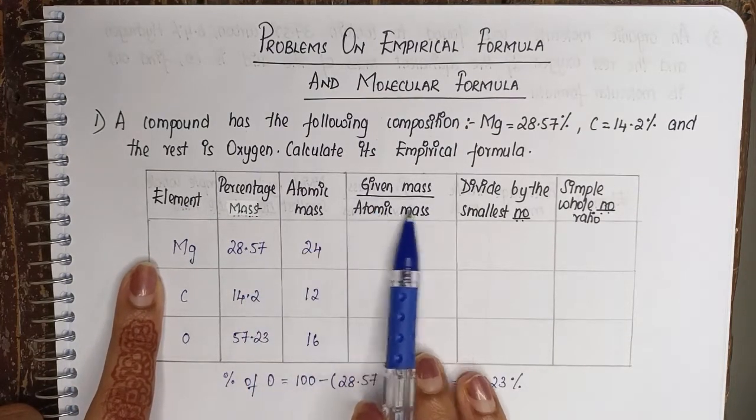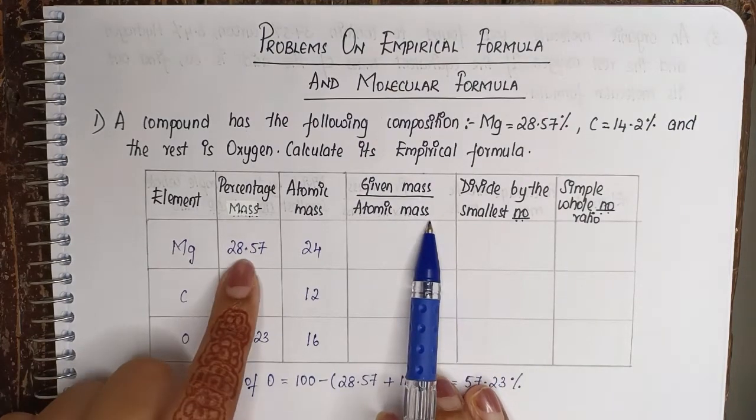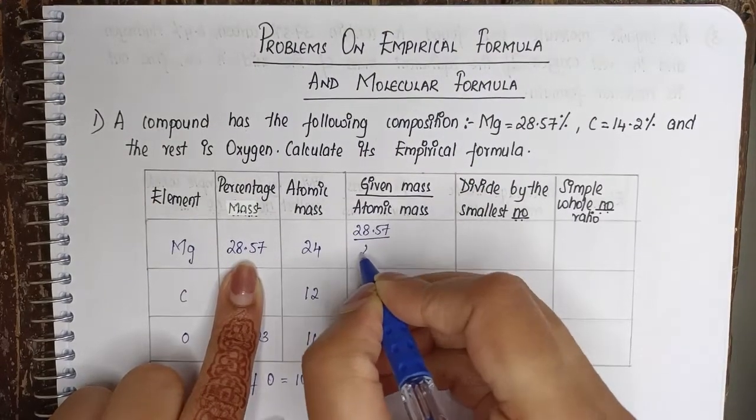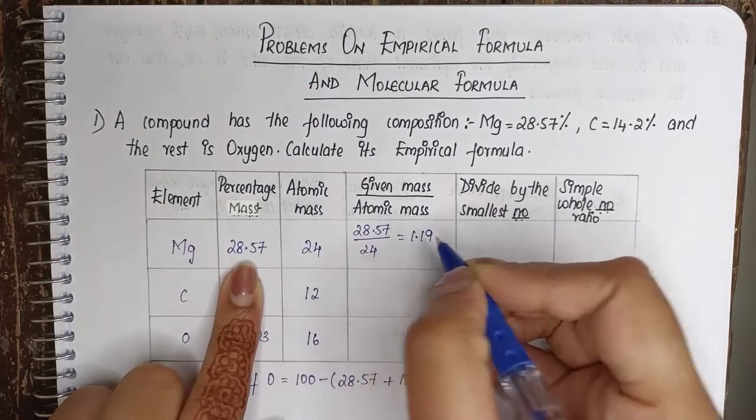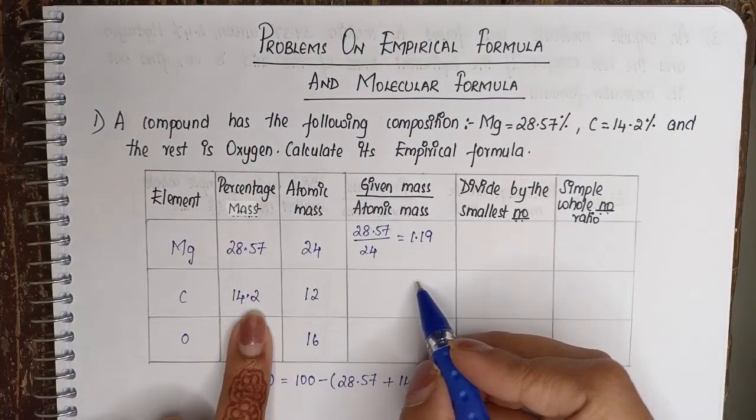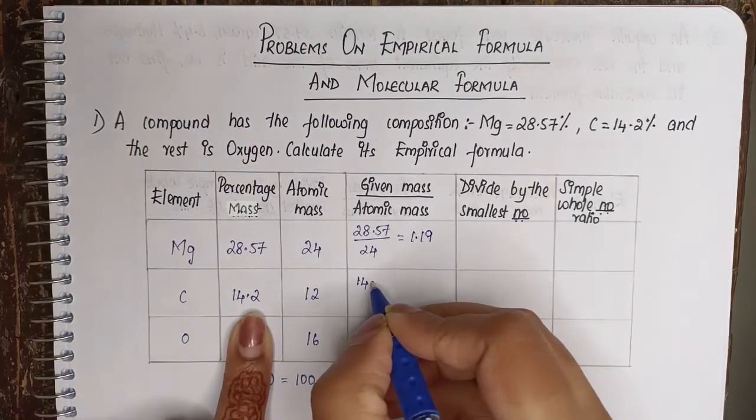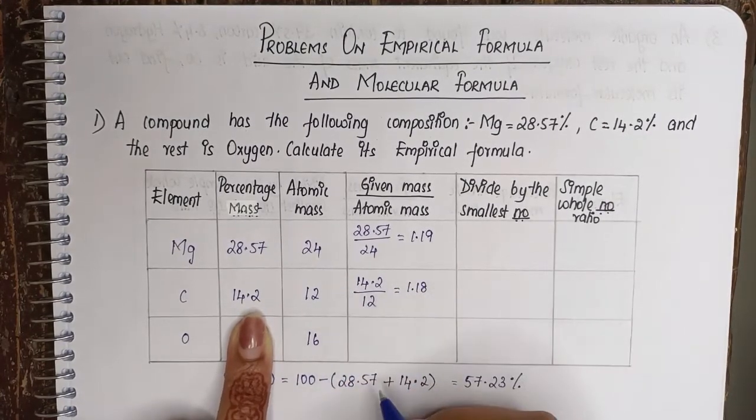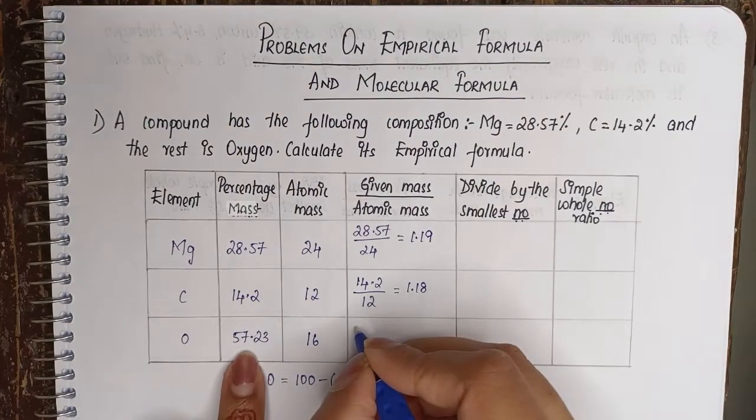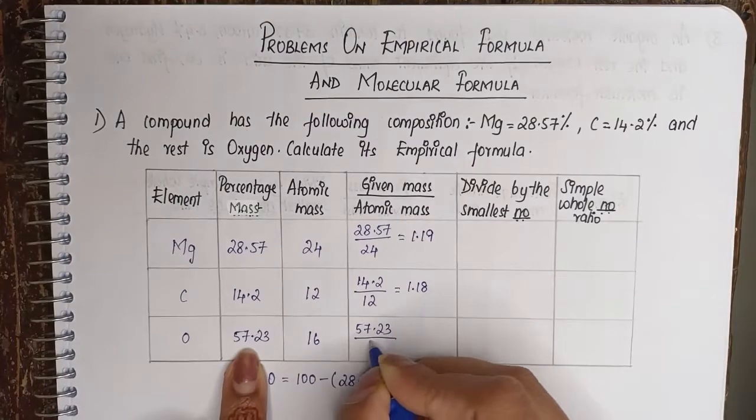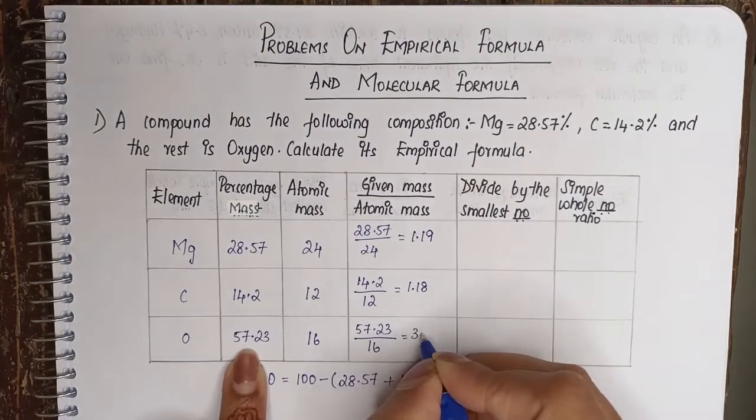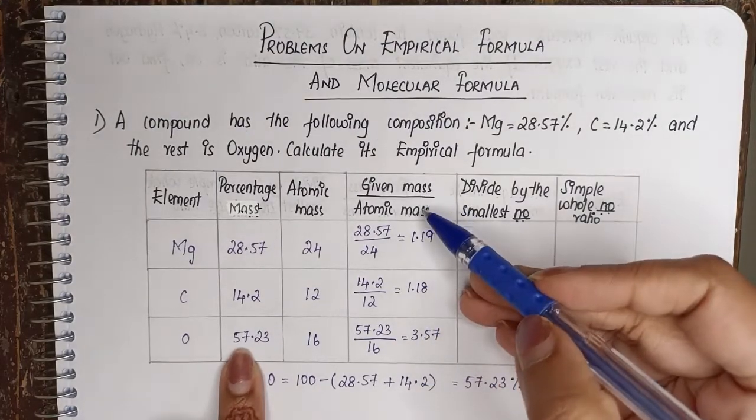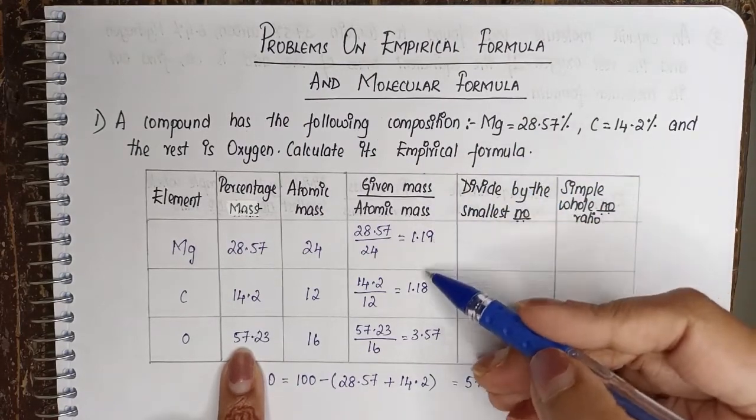So now we are going to calculate given mass by atomic mass. For magnesium, the given mass is 28.57 divided by 24, which gives 1.19. Similarly for carbon, given mass is 14.2 and atomic mass is 12, which gives 1.18. For oxygen we have 57.23 divided by 16, which gives 3.57. So here we have the n value, which is number of moles. Your given mass by atomic mass is nothing but number of moles.